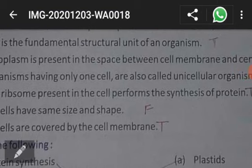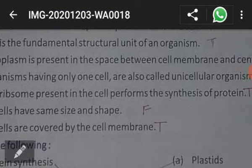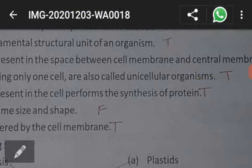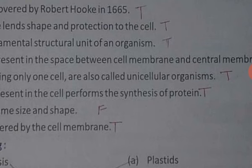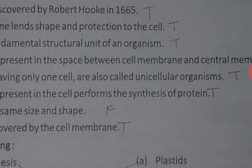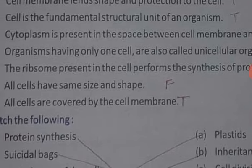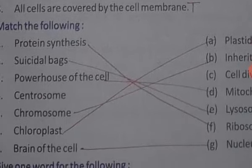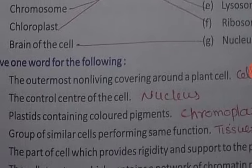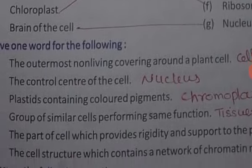True or false: the cell was discovered by Robert Hooke in 1665, true. Cell membrane lends the shape and protection of the cell, true. Cell is the fundamental structural unit of an organism, true. Cytoplasm is present in the space between the cell membrane and central membrane, true. Organisms having only one cell are called unicellular organisms, true. Ribosomes present in the cell perform the synthesis of protein, true. All cells have the same size and shape, false. All cells are protected by the cell membrane, true.